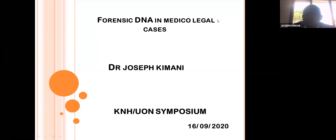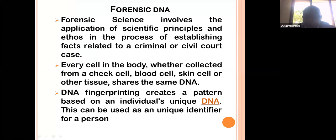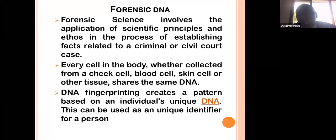When we talk about forensic science, we talk about the science that is applicable to the law — all the scientific principles and methods used to establish facts relating to criminal or civil matters before a court of law. The intersection between forensic science and the court of law is where we apply forensic evidence to connect a scene of crime to a possible assailant and see whether there is a possible match.